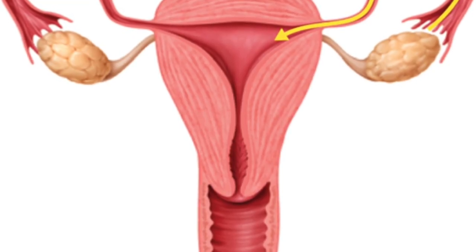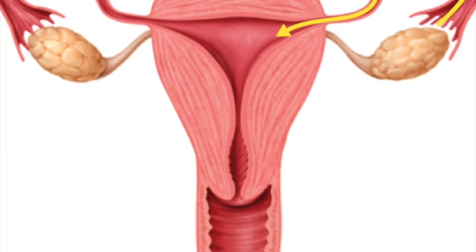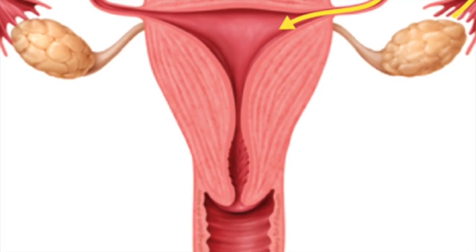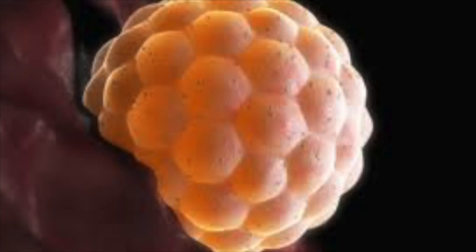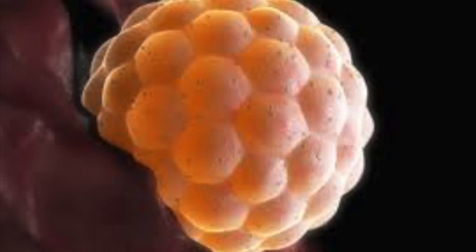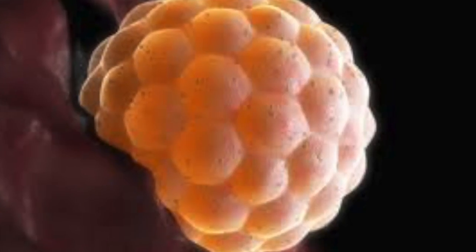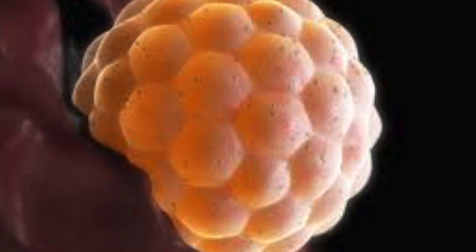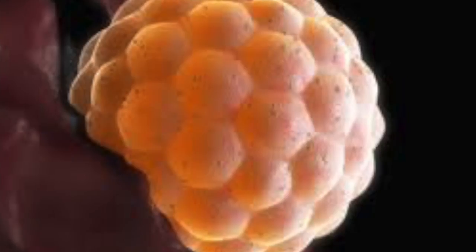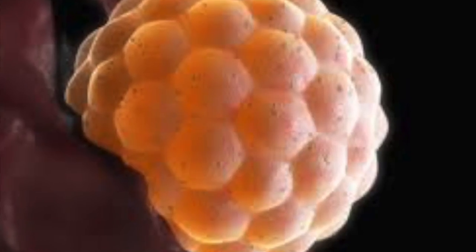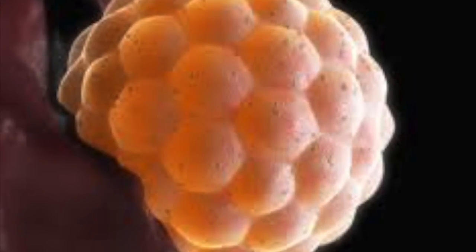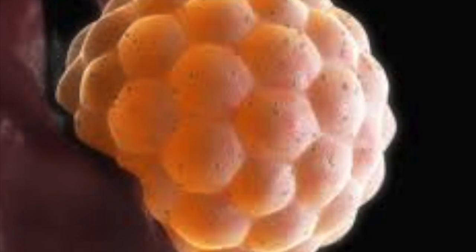The zygote then begins its journey down the fallopian tube into the uterus. From there, the zygote must implant itself in the lining of the uterus in order to receive the nourishment it needs for survival from the female body.